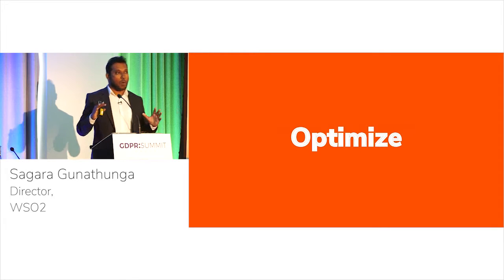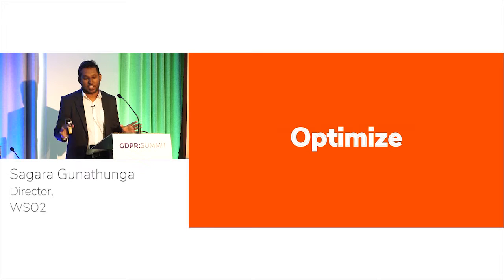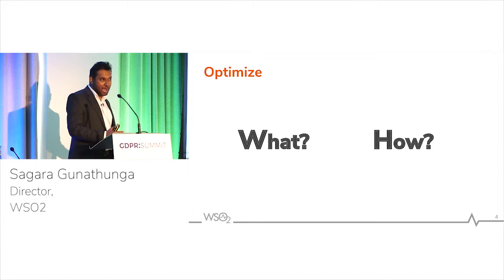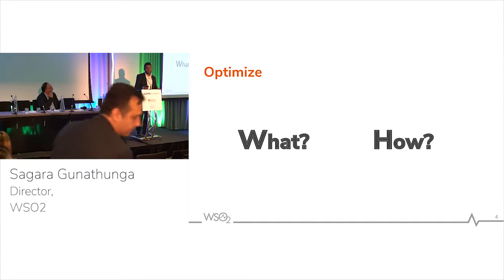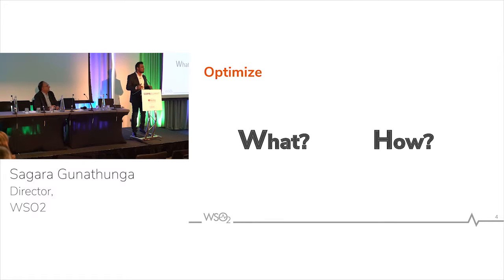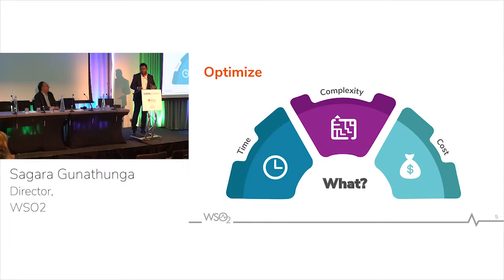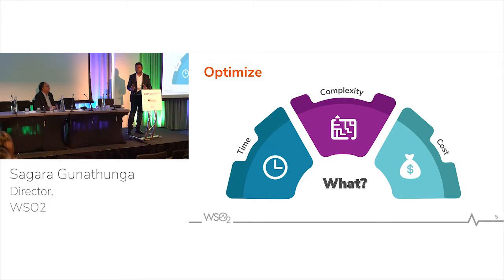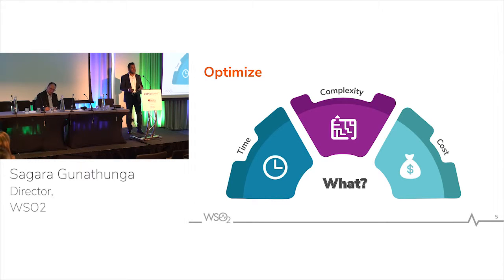This session is about optimizing. When you optimize, there are two things: what and how — what to optimize and how to optimize. Since GDPR is very broad, it's nearly impossible to discuss it as a single thing, so let's break it down. For simplicity, let's look at how to optimize time, cost, and complexity of your GDPR strategy.